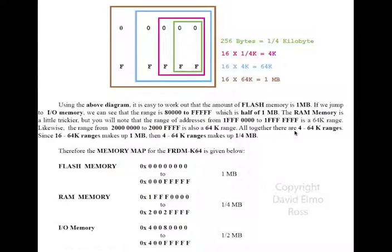Altogether there are four 64k ranges, and we know that 16 64k ranges is one megabyte, so four is a quarter of that. So the total amount of RAM we have here is one quarter of a megabyte.